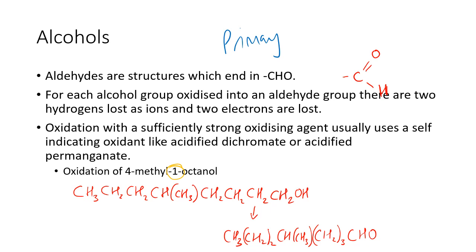Generally, we put the alcohol groups and stuff on the end if we can, and then we have the aldehyde group written nicely there. But if it was on the other side, you would write it as OHC, which is a bit silly looking, but that's what it would be. And then reading here, for every alcohol group oxidized into an aldehyde group, there are two hydrogens lost as ions and two electrons are lost.